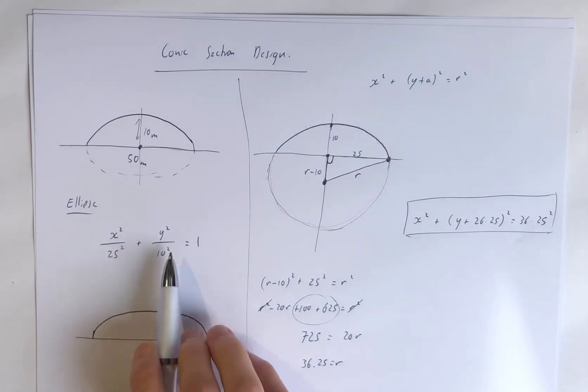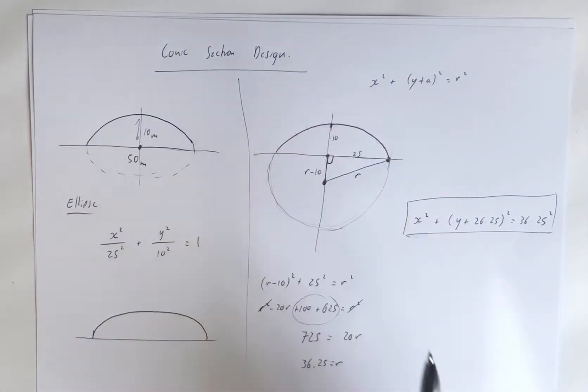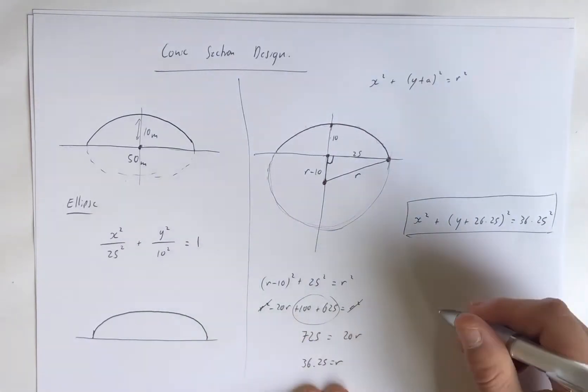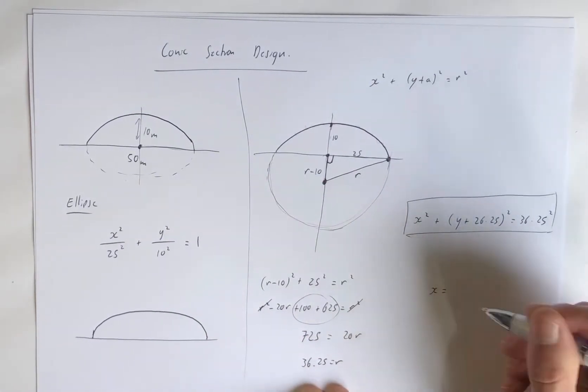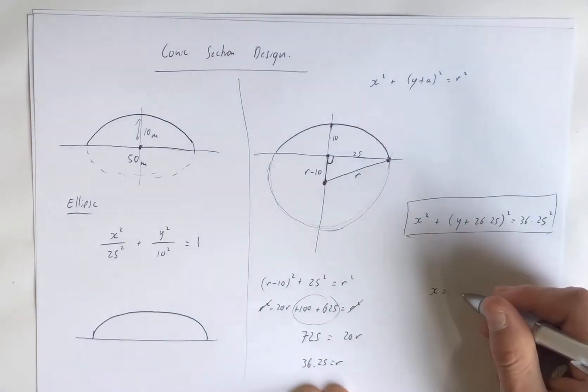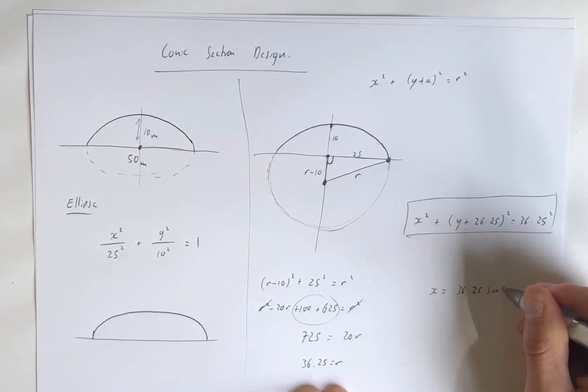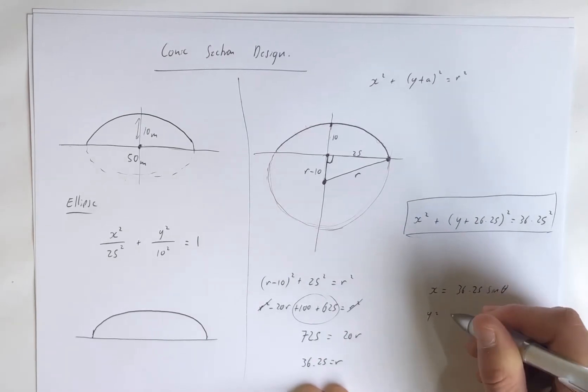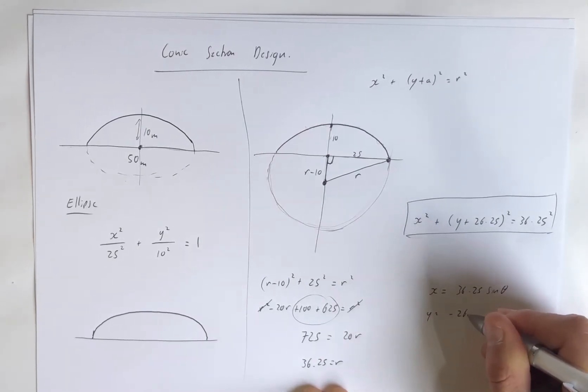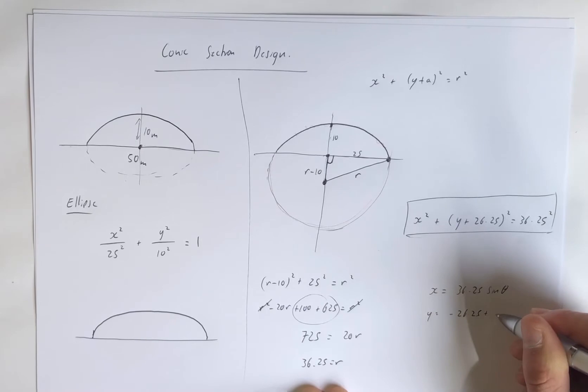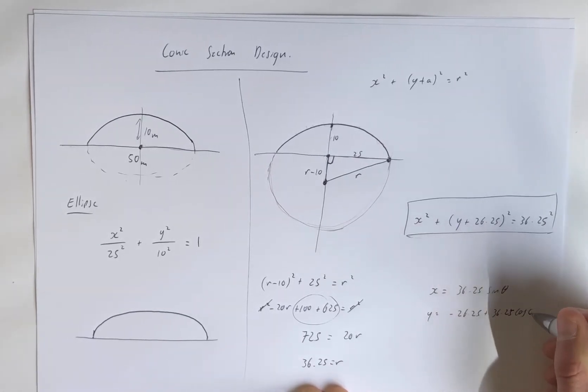And so if we were to write this in parametric form, X would be 36.25 sine theta, and Y would be negative 26.25 plus 36.25 cosine theta. And then we would have parametric equation as well.